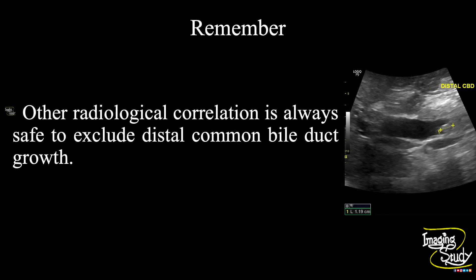Another take-home message: other radiological correlation is always advisable to exclude growth distal to the common bile duct in a case where you find choledocholithiasis. You may stop your diagnosis at choledocholithiasis, but there might be something distal to that. So it's better to evaluate further.